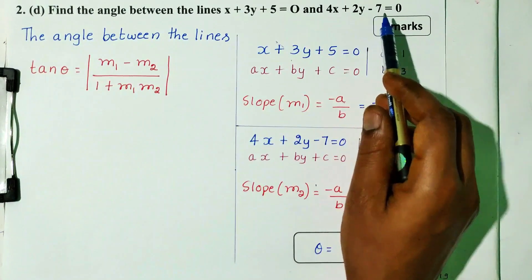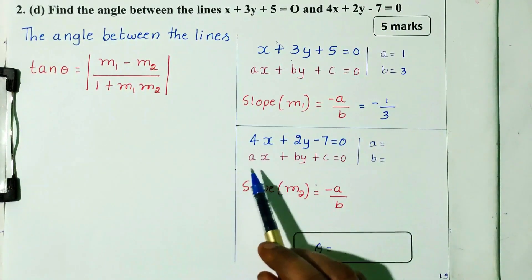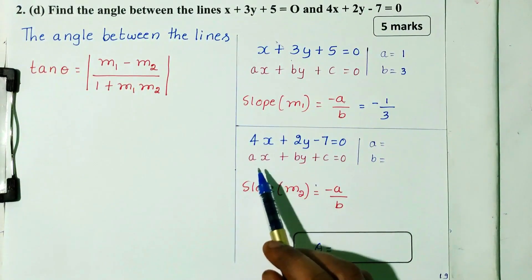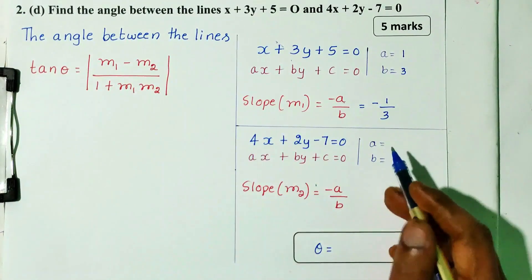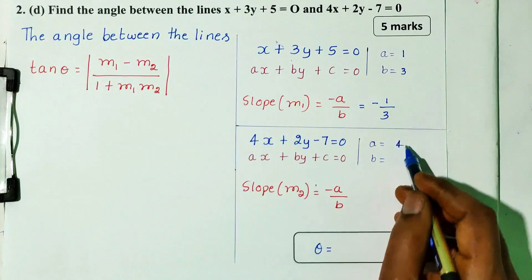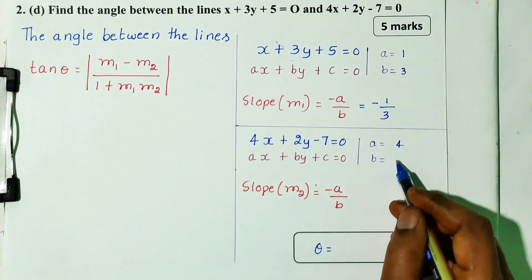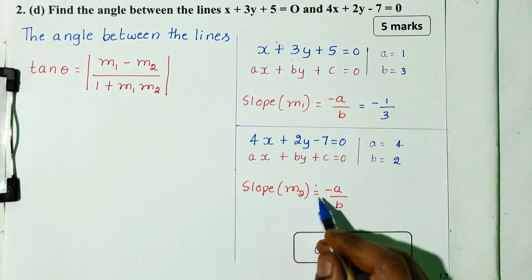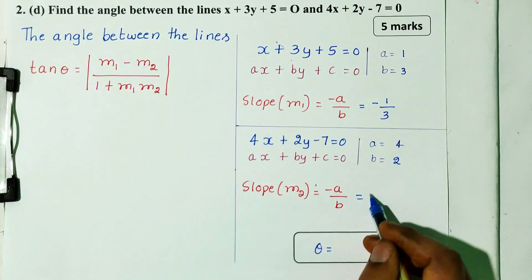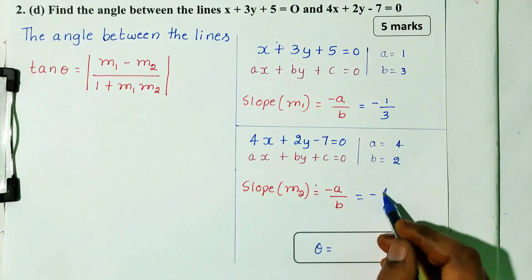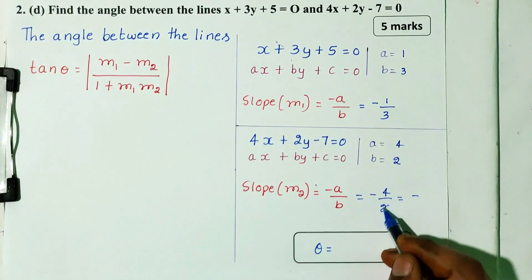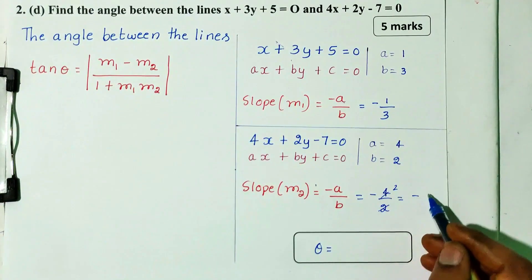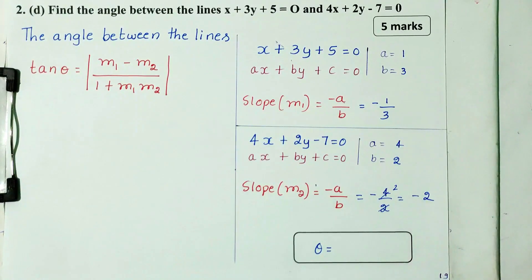The second line is 4x plus 2y minus 7 equals 0. Comparing with the general equation ax plus by plus c equals 0, a equals 4 and b equals 2. So slope m2 equals minus a divided by b, which is minus 4 divided by 2.